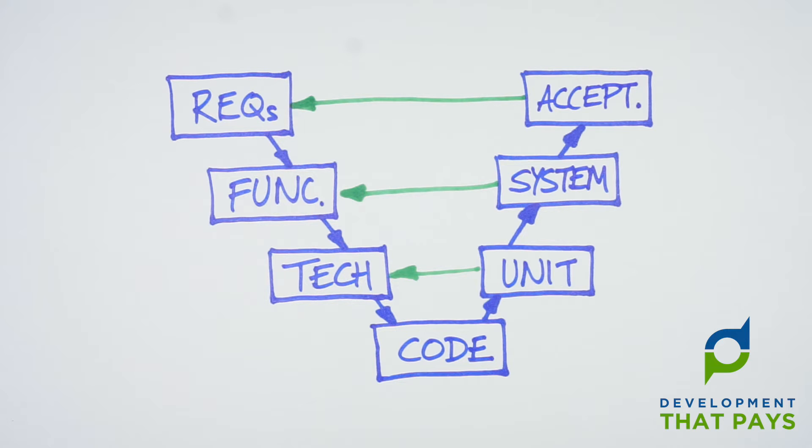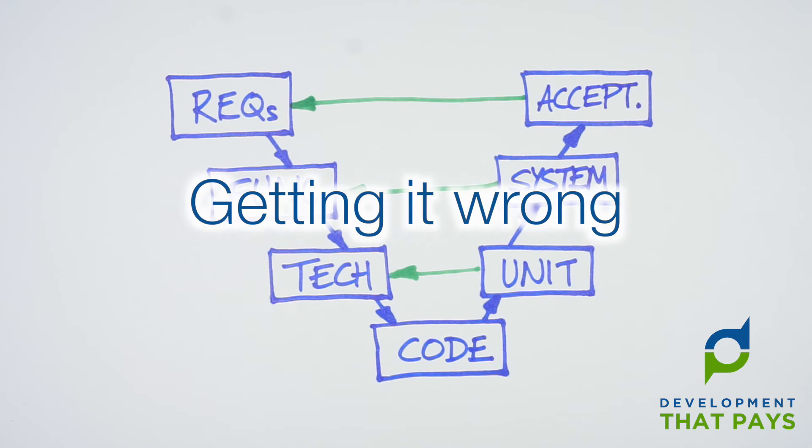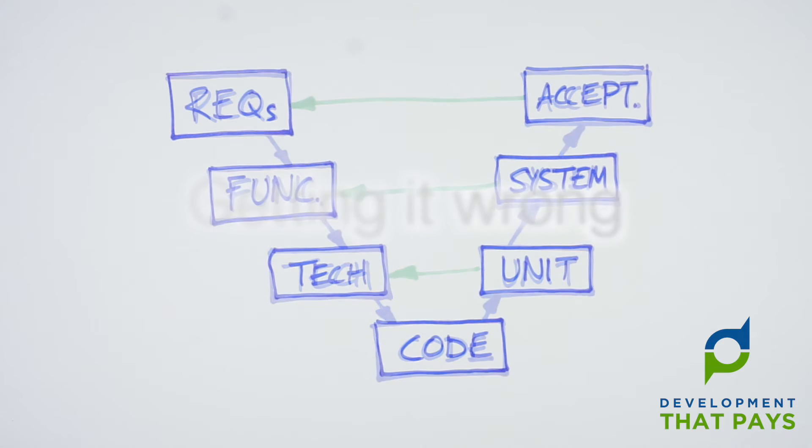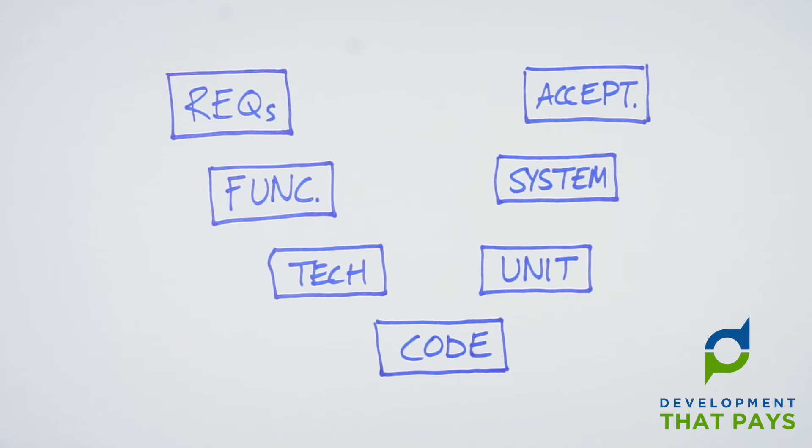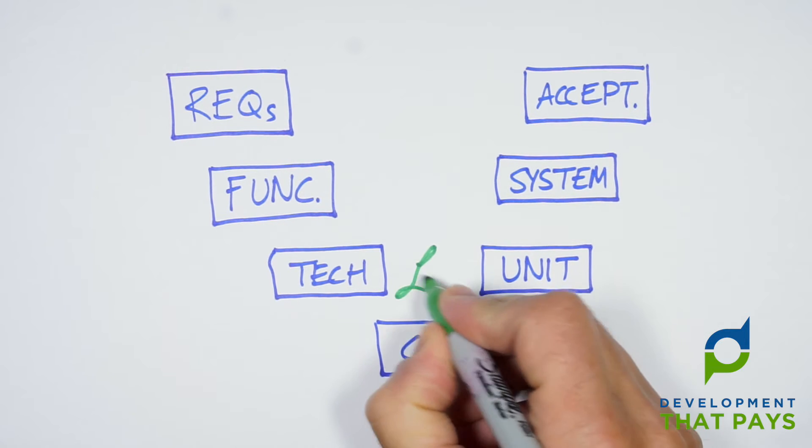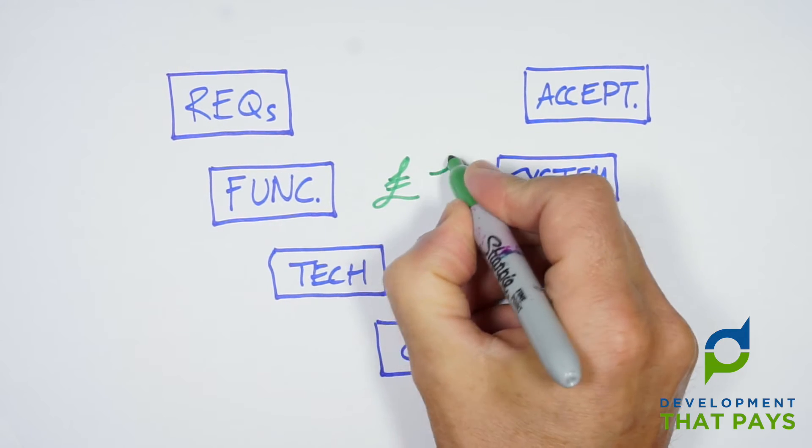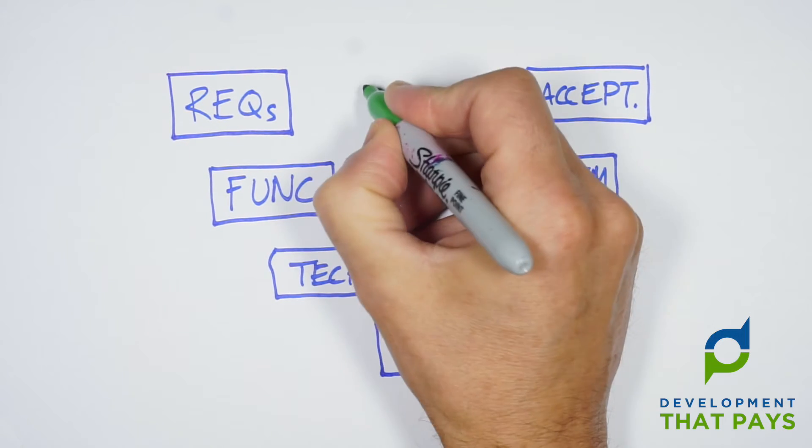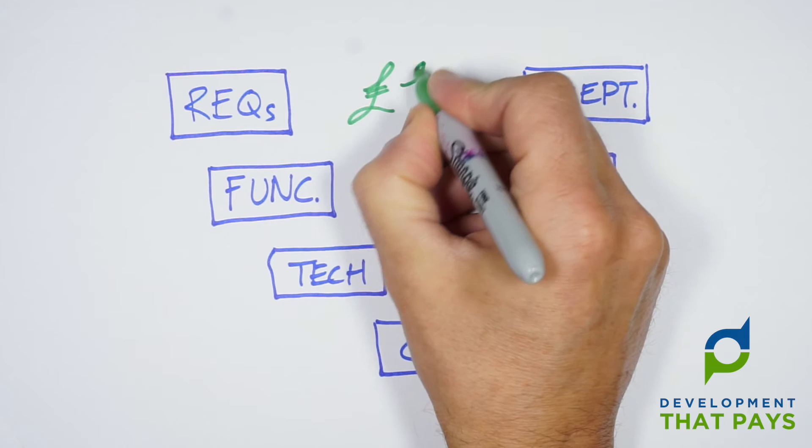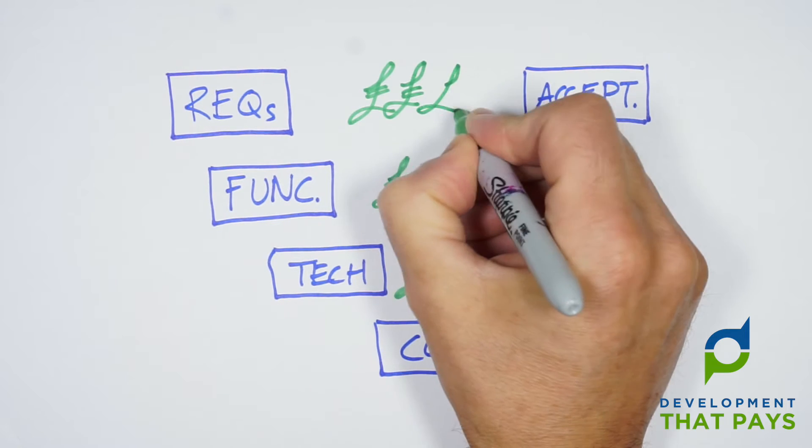It's that each of these horizontal lines is an indication of the cost of getting it wrong. So bugs, unless they're particularly insidious, are generally quick and simple and therefore cheap for us to rectify. But if we've gone and built entirely the wrong thing, then of course that's a much more expensive mistake.